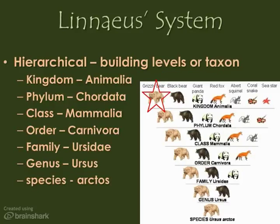The species Arctus refers specifically to brown bears, which describes the grizzly. So if you wanted to talk intelligently to a biologist, you would refer to it as Ursus arctus — grizzly bear.